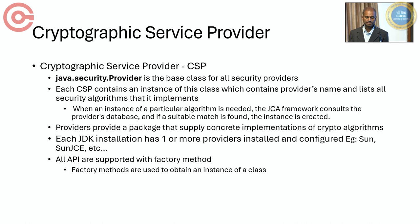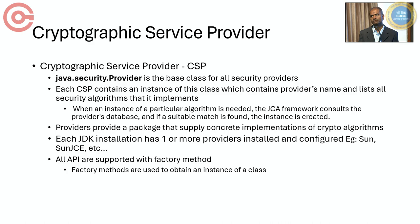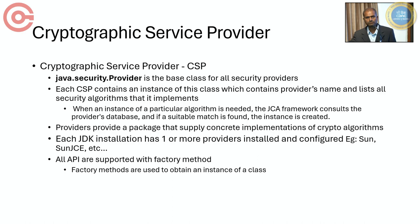JCA is an extension of the cryptographic provider, basically SunJCE. There are two terms: API is the application provider interface, and SPI is the service provider interface, which provides the classes, interfaces, and methods which can be extended and implemented. The main core package to note here is java.security.provider, which is the main base class for all security providers. Each CSP contains an instance of this class, which contains the provider's name and lists all the security algorithms it implements.